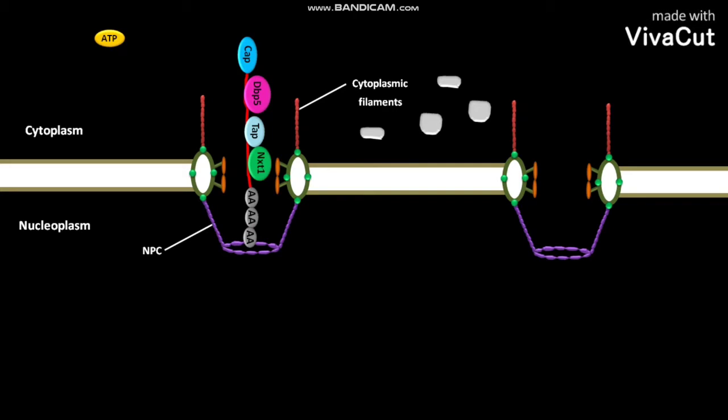the DBP-5 and other mRNA exporters dissociate from the mRNA before it reaches the cytoplasmic side of the NPC. The DBP-5 associates with the cytoplasmic filaments of the NPC.